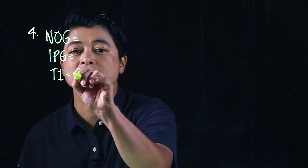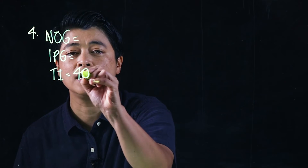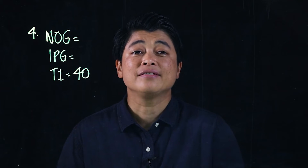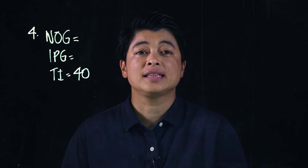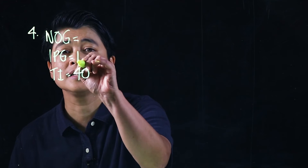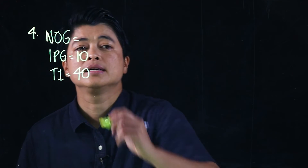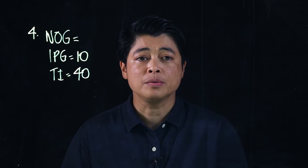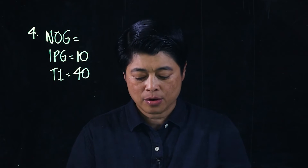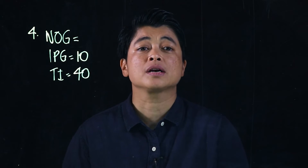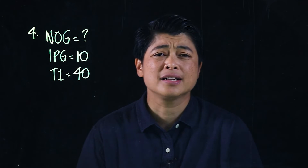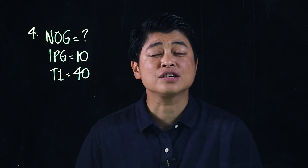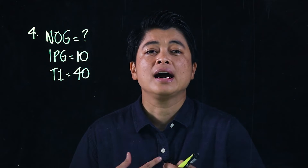Mrs. Ravi has 40 pupils in her class — that's the total items. Her class is divided into groups of 10, so that means that's items per group. The question is: how many groups are there?